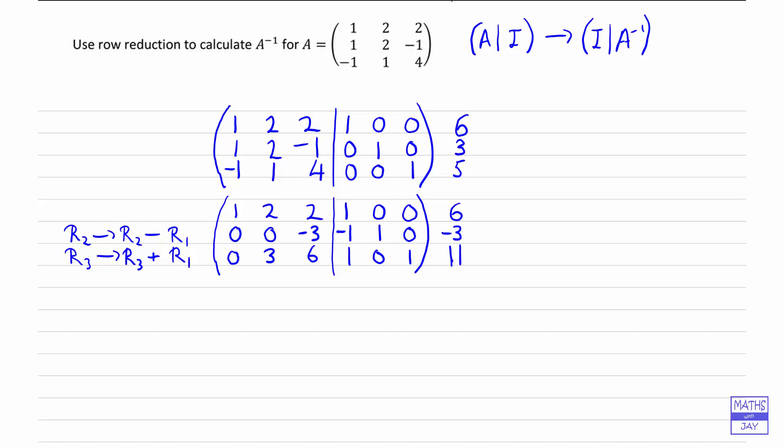And then what we're going to do is check that the addition across the row works correctly. The first row hasn't changed at all, so we've got 1 plus 2 plus 2 plus 1 is 6 — no problem. Second row, so this is where the first proper check is coming in: we've got 0 minus 3 minus 1 plus 1, and that is negative 3, so that checks out. And then the last row: 3 plus 6 plus 1 plus 1 is 11. So far it looks as if we haven't made any mistakes.